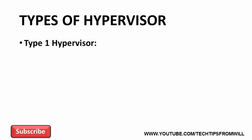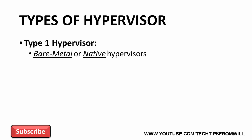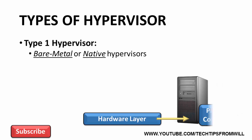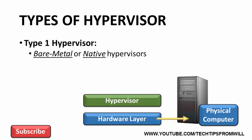Let's first look at a type 1 hypervisor. Type 1 hypervisors are sometimes referred to as bare metal or native hypervisors. With a type 1 hypervisor, you first have what is referred to as the hardware layer. The hardware layer is nothing more than a regular physical computer. On top of the hardware layer, the administrator then installs the hypervisor. You can think of a hypervisor as a very basic operating system. The job of the hypervisor is to manage resources such as the CPU and RAM on the host system.